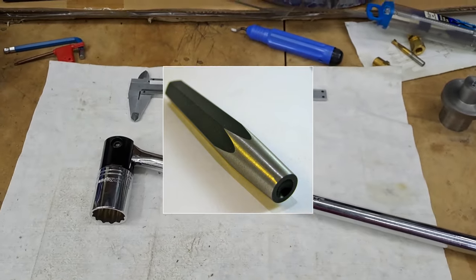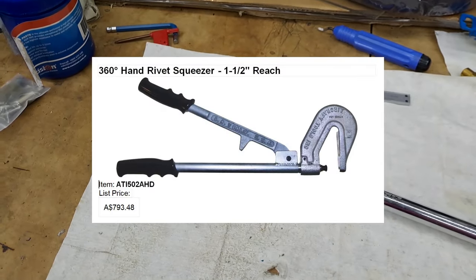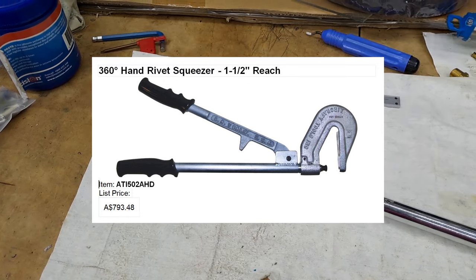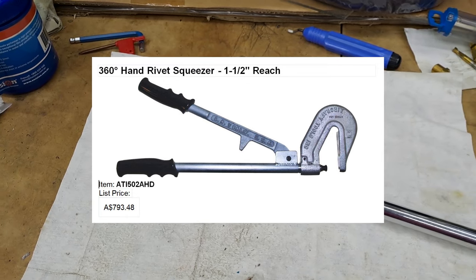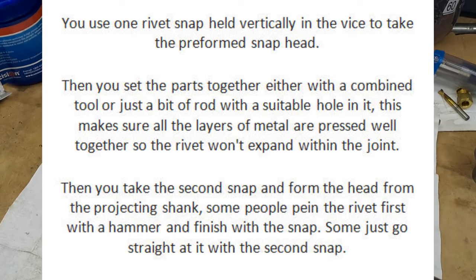Now of course the other method is to use a rivet press. Rivet presses are more common in the smaller sizes but I'm building in seven and a quarter. Now seven and a quarter needs a heavy duty version of a rivet press.